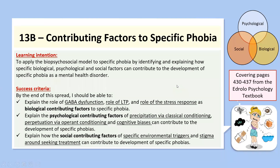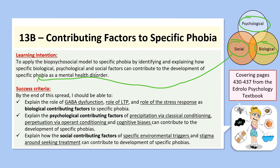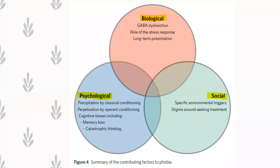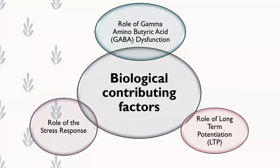Now moving to 13b — we know what specific phobia is, its symptoms and characteristics. Now let's look at how a person actually develops specific phobia in the first place, using the biopsychosocial approach: examining the biological, psychological, and social factors that combine to lead to its development.